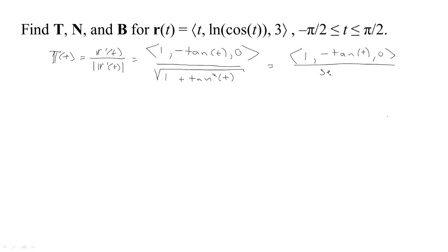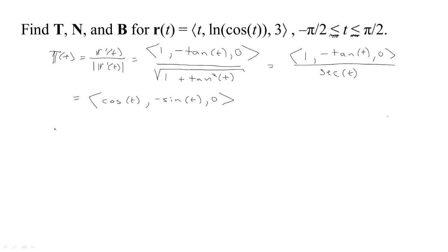That would be the absolute value of the secant, but in the range with t between negative pi halves and pi halves, the secant is positive, so the absolute value of the secant is just the secant. With a little simplification, 1 divided by the secant is cosine t, and tangent times cosine is minus sine, so we get the unit tangent vector (cosine t, minus sine t, 0).